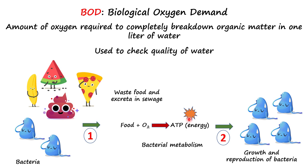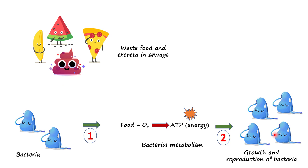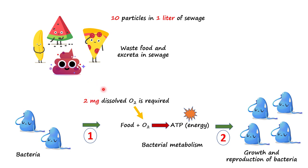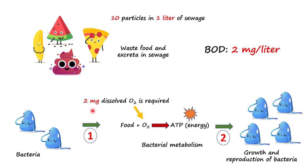The bacteria undergo growth and replication — more and more progeny come and utilize the food and oxygen to continue the cycle. Now, let's assume one liter of sewage water contains 10 such particles, and bacteria require 2 milligrams of oxygen to digest those 10 particles. Hence we can say that the BOD is 2 milligrams per liter.